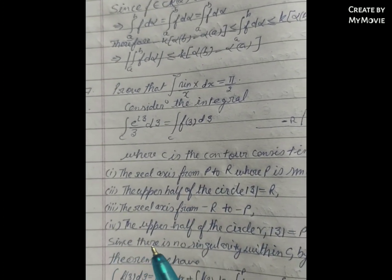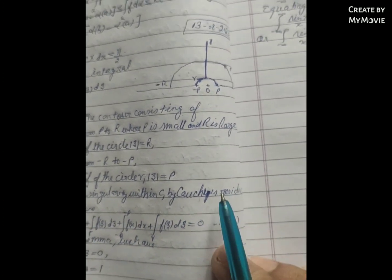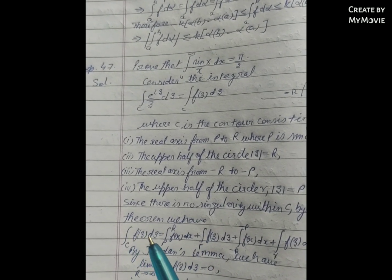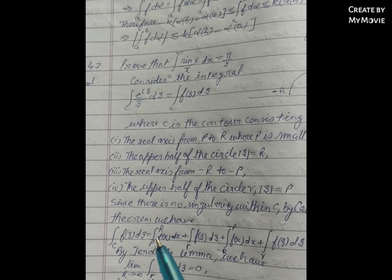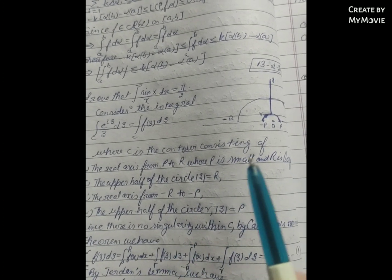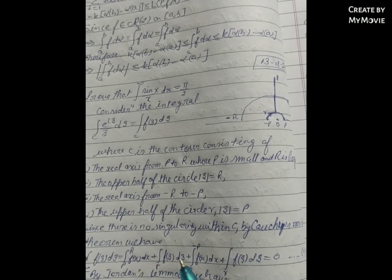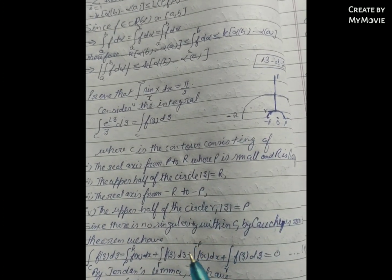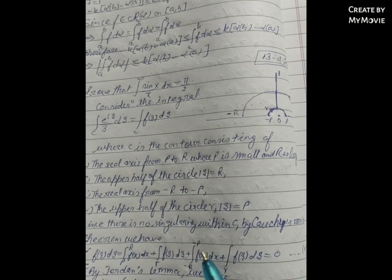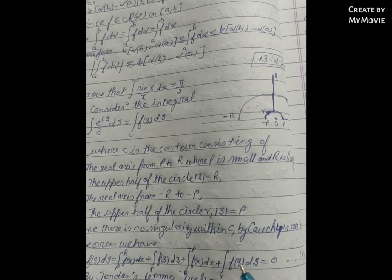Since there is no singularity within the contour C, by Cauchy's residue theorem the integral over C of f(z) dz equals zero. This gives us: the integral from ρ to R of f(x) dx, plus the integral over the large arc Γ of f(z) dz, plus the integral from −R to −ρ of f(x) dx, plus the integral over γ of f(z) dz equals zero. Call this equation (1).